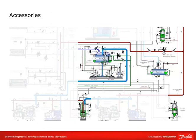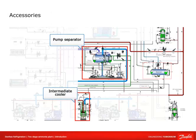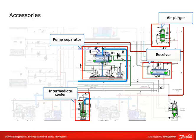Accessory components of a two-stage ammonia plant include the intermediate cooler, pump separator, receiver, air purger, system cleaner, and other accessories. We will look at the function of each of these accessories individually.